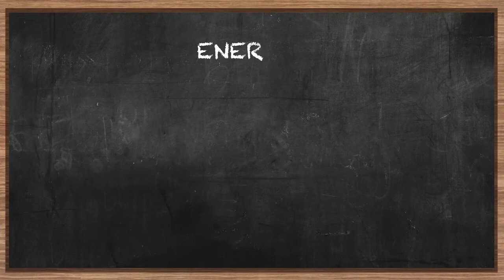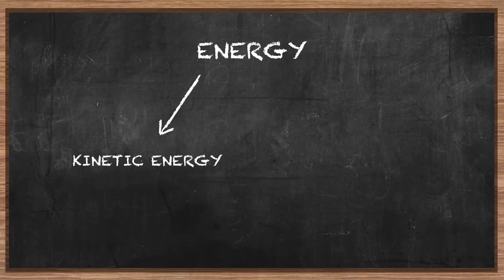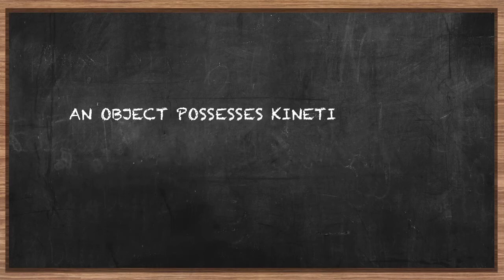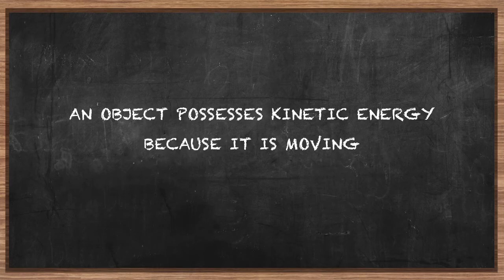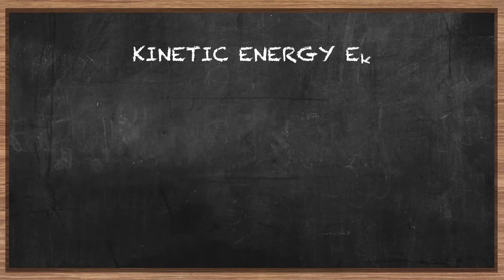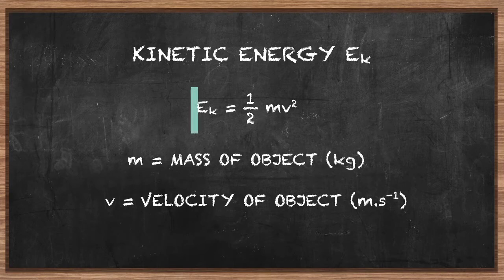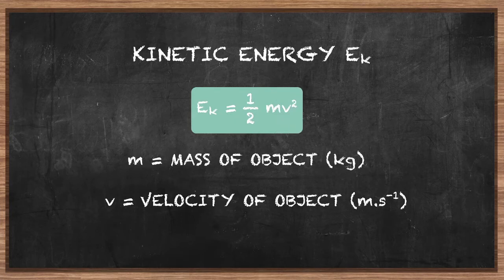There are two types of energy: kinetic energy, which is the energy generated by an object due to its motion, and potential energy, which is energy that's stored in the object. An object possesses kinetic energy because it is moving. We calculate the amount of kinetic energy using the formula: EK equals one half times mass times velocity squared — EK = ½mv².